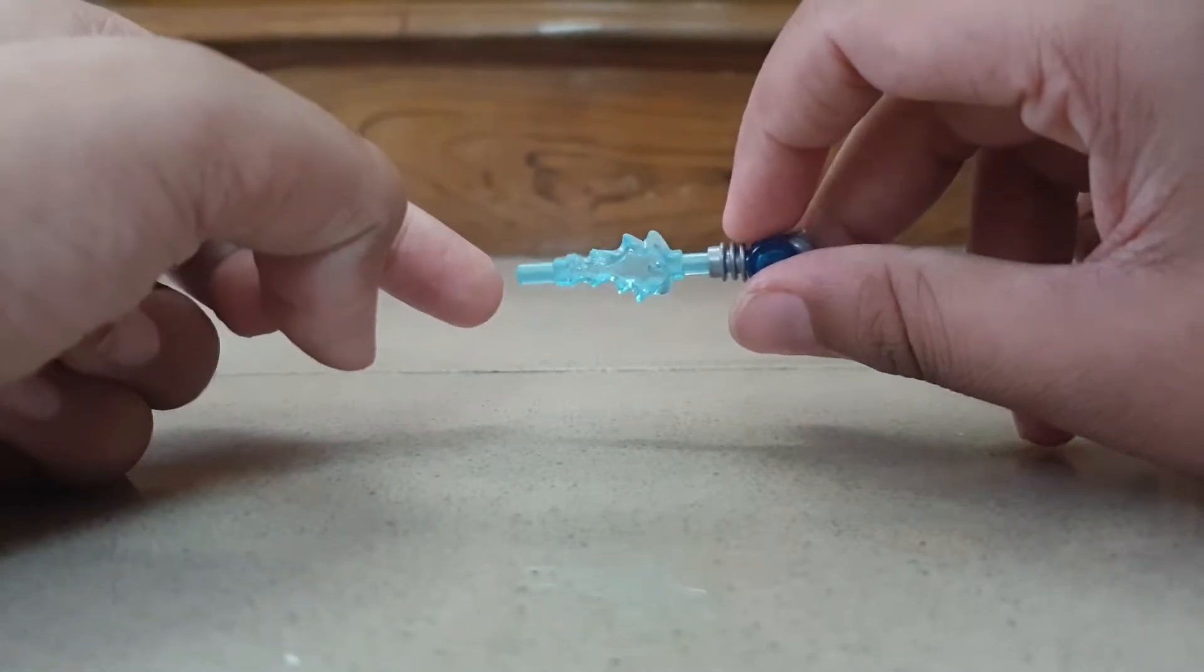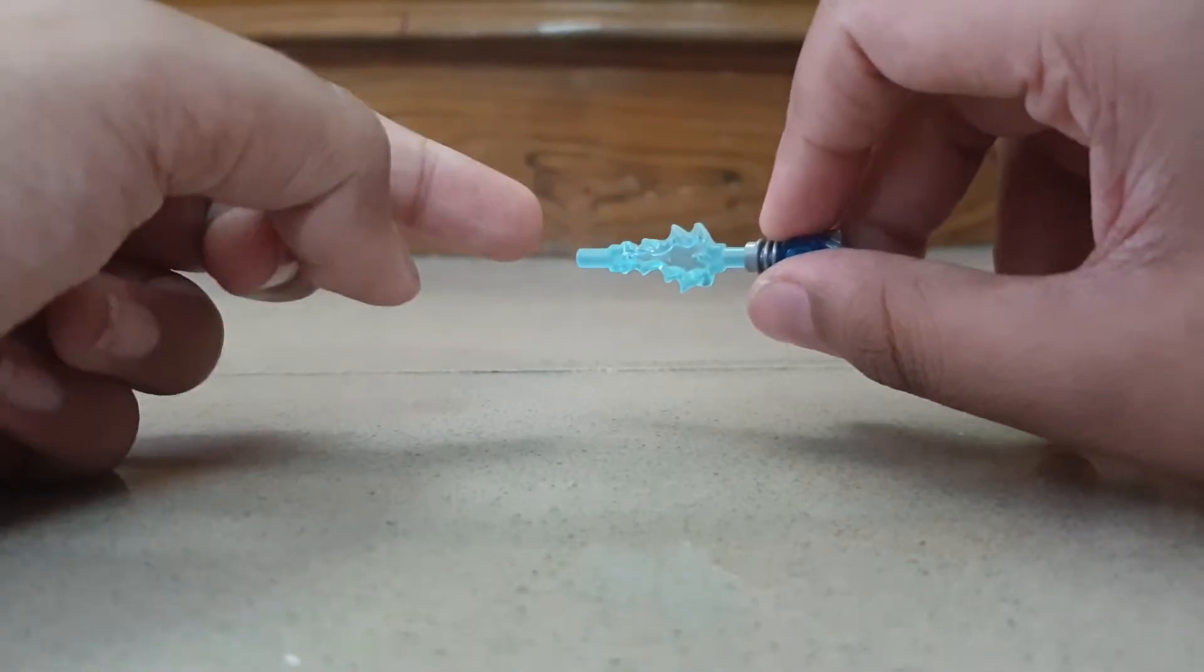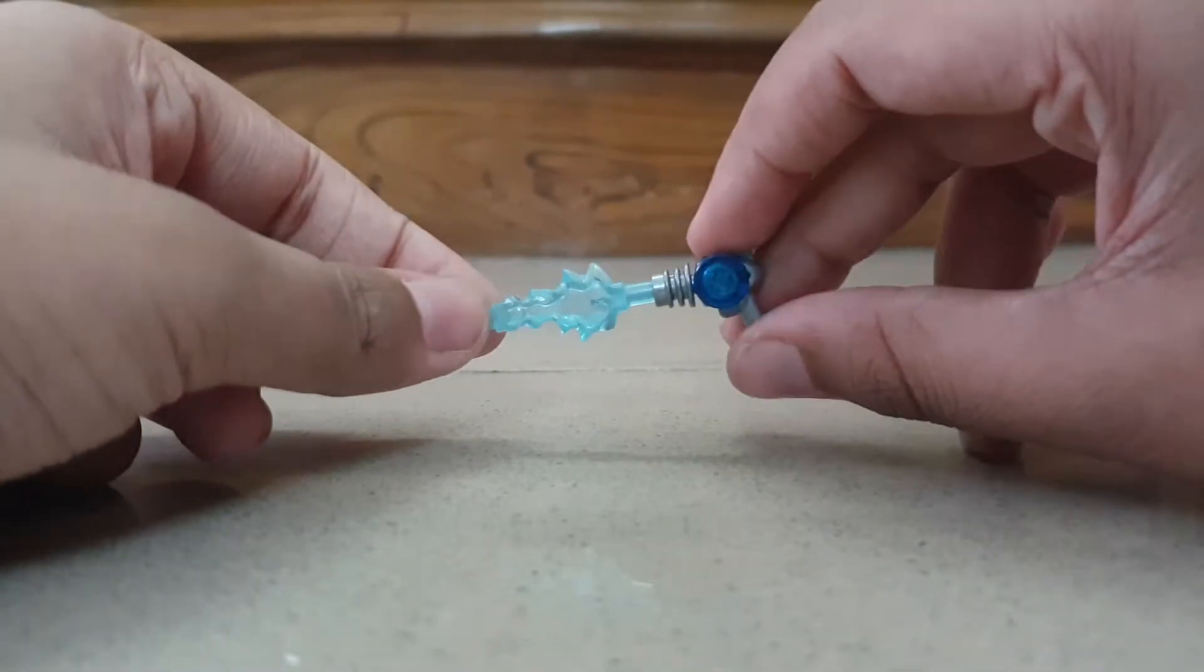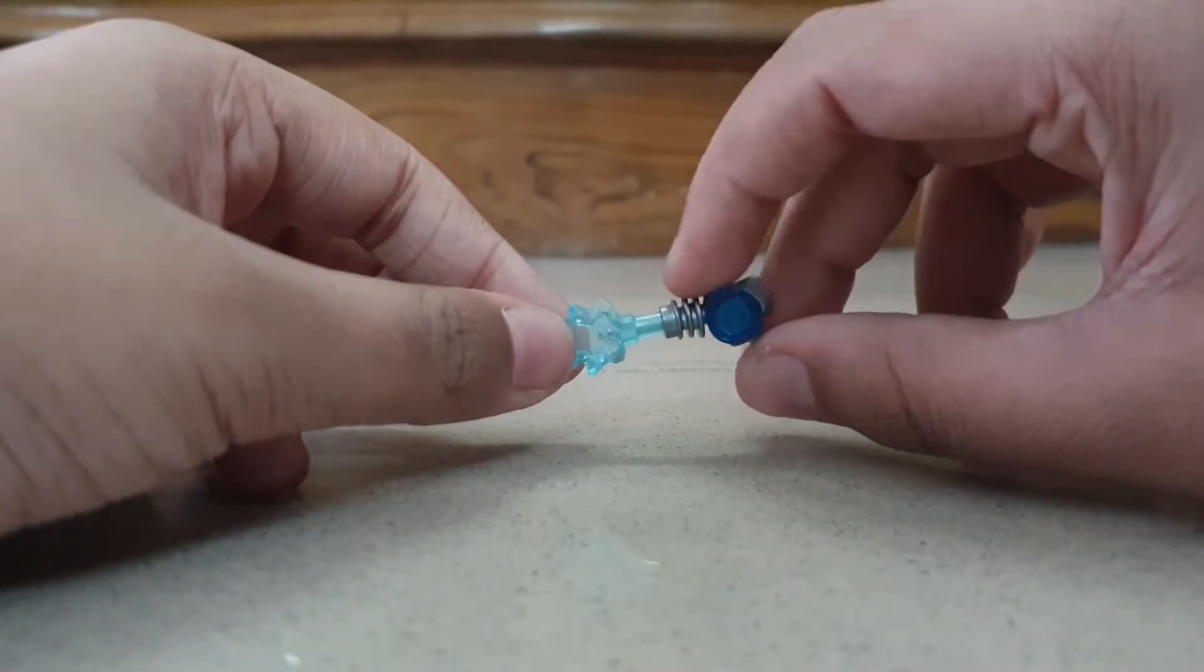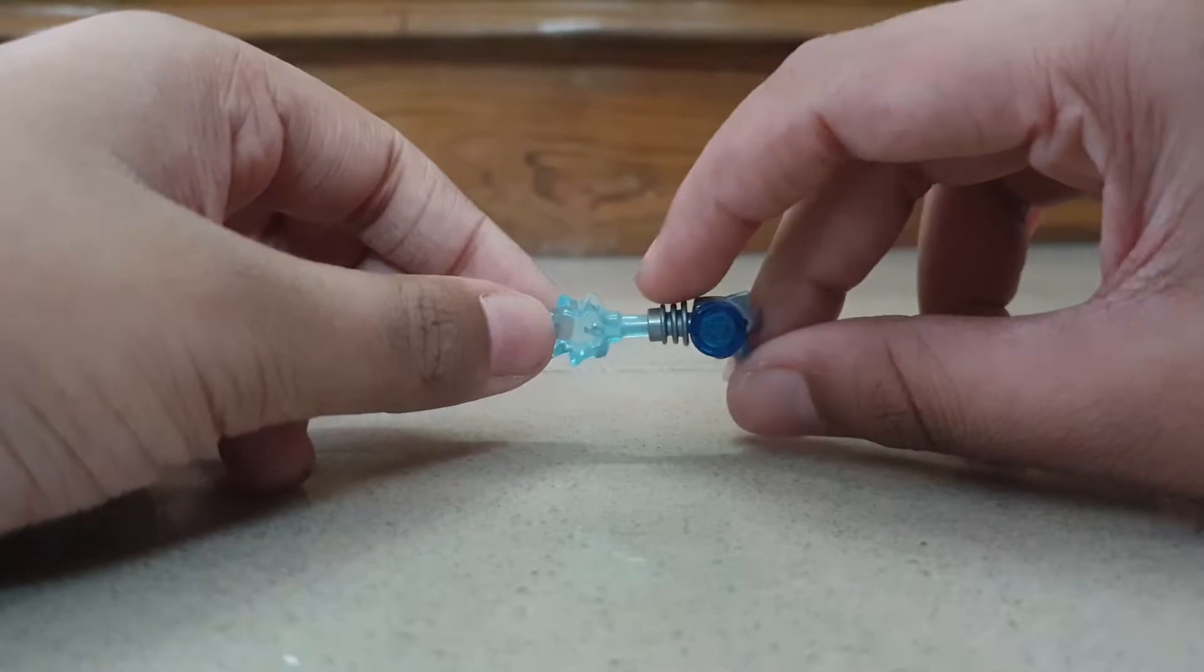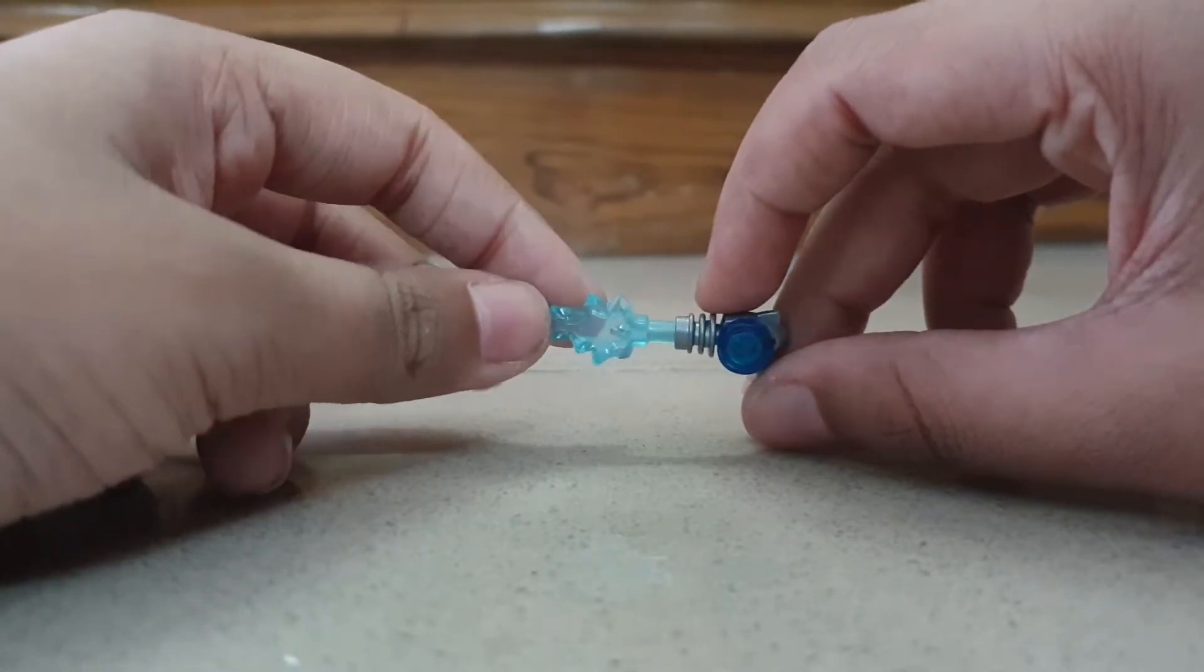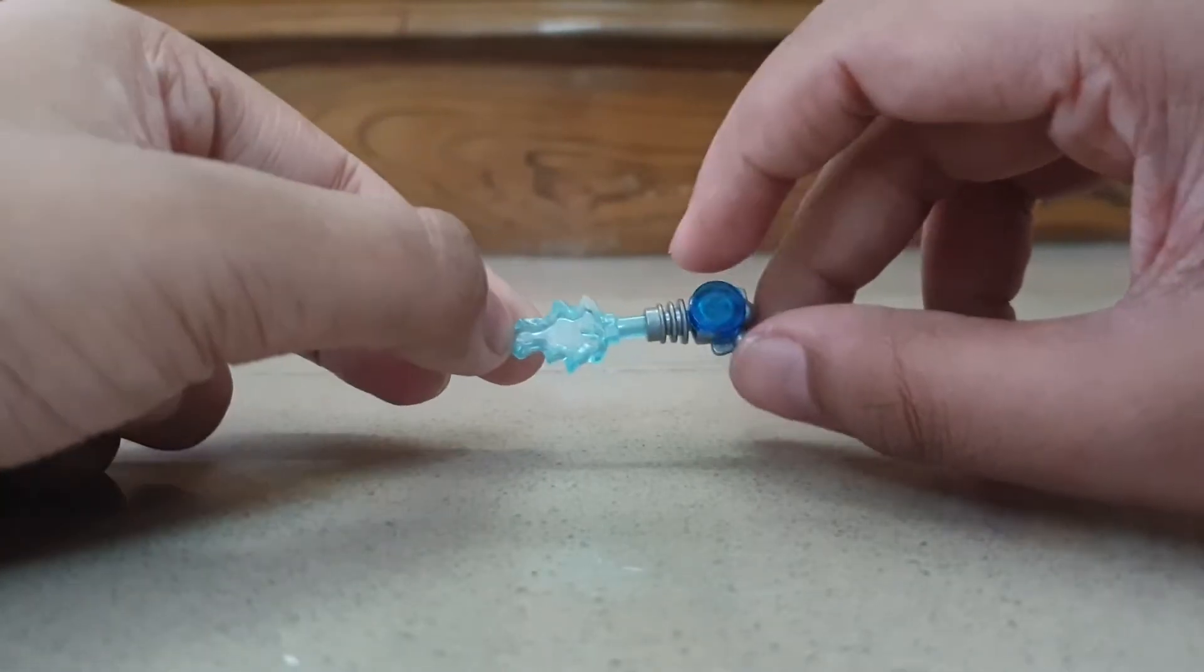Before I get started, don't forget to subscribe to my channel and turn on notifications so you never miss a new upload. This gun is from The Incredibles 2: The Great Home Escape set.